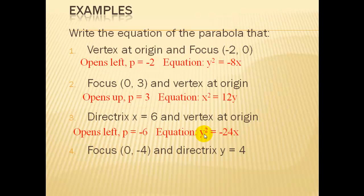Finally, if we have the focus and the directrix, remember the distance between the focus and the directrix is 2 times p, so the distance between negative 4 and 4 on the y-axis is 8 units, so our p is 4. And the focus is below the origin, so we have a vertical parabola opening down with the value of p of negative 4, giving us the equation as shown here.